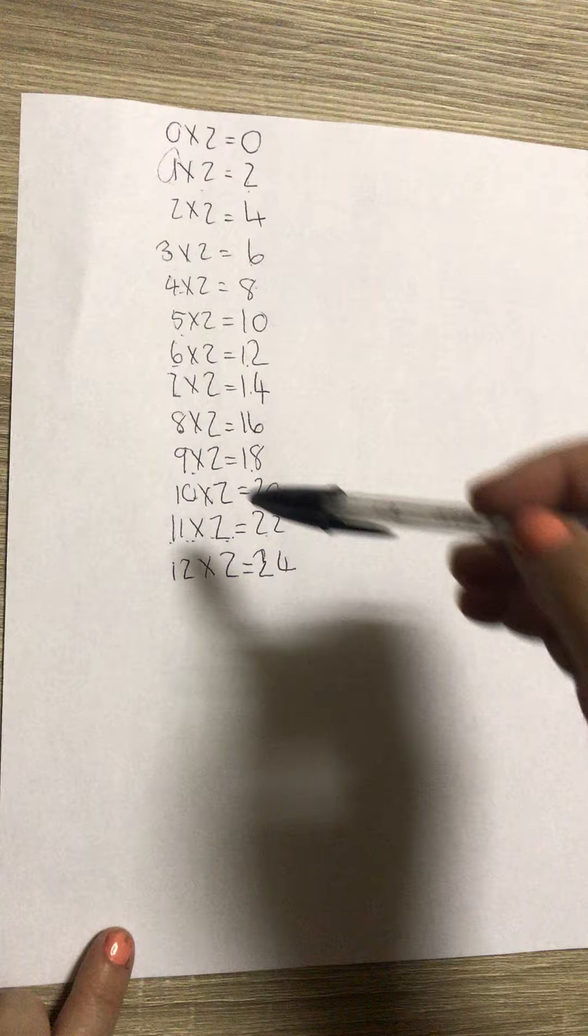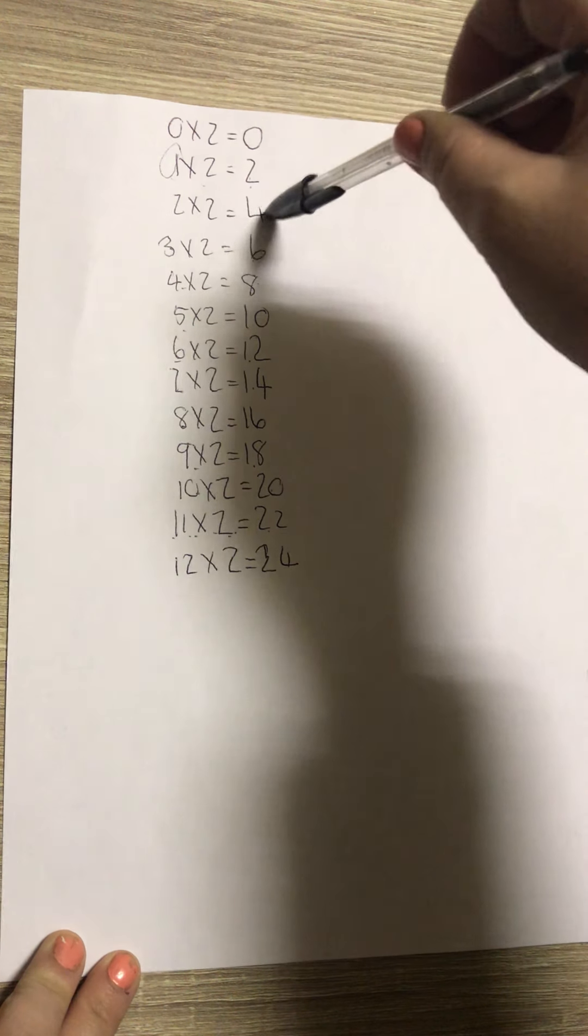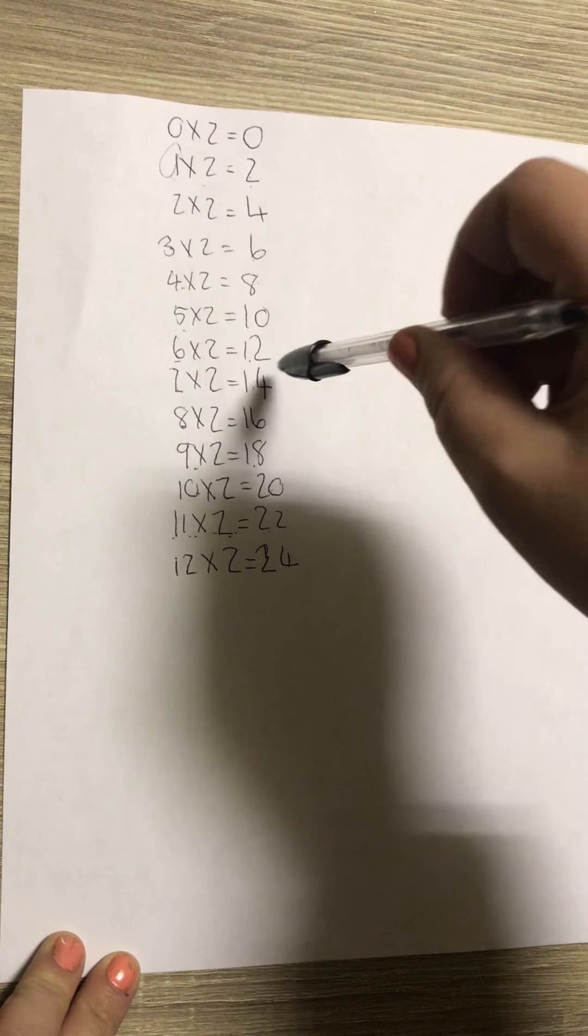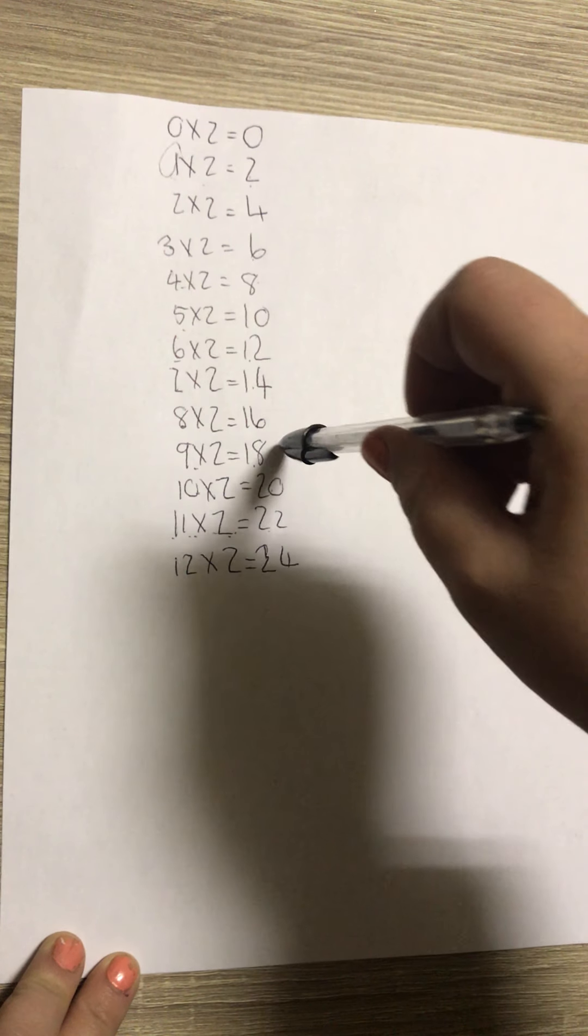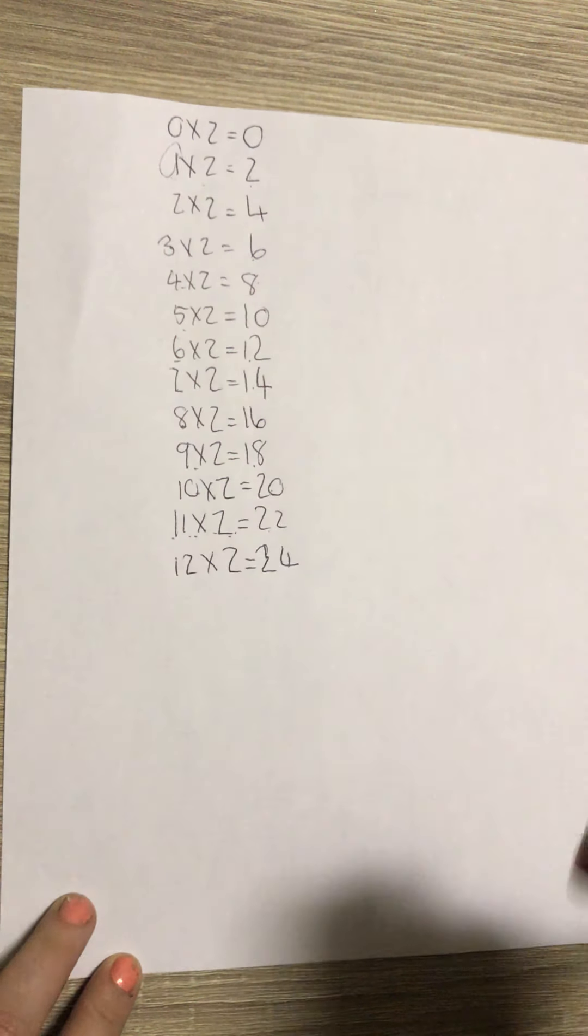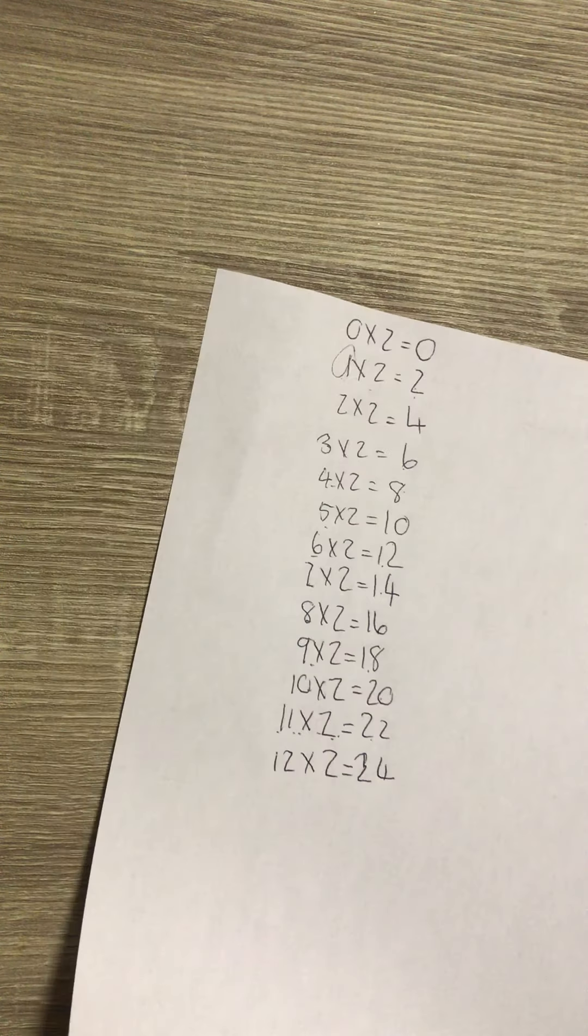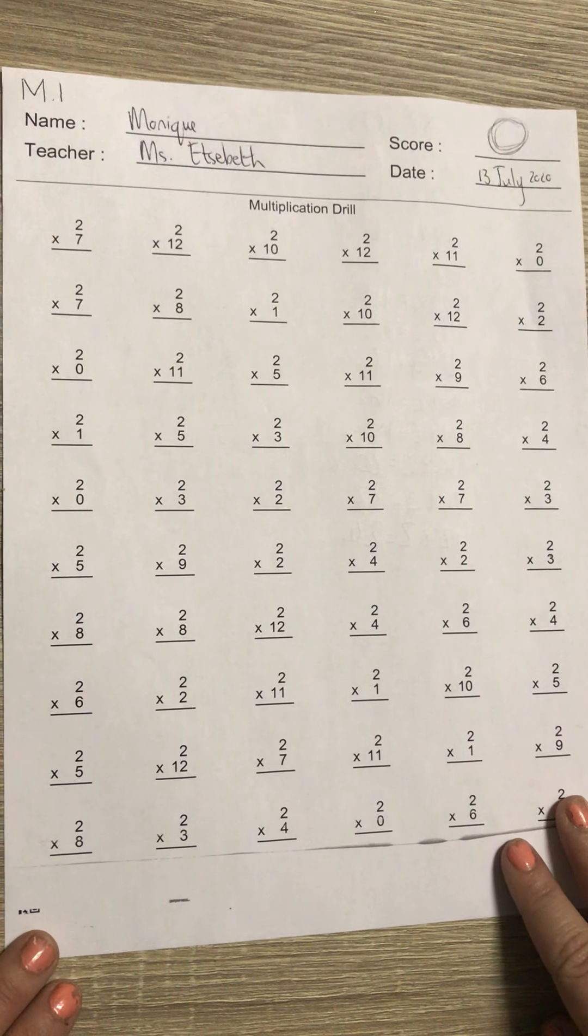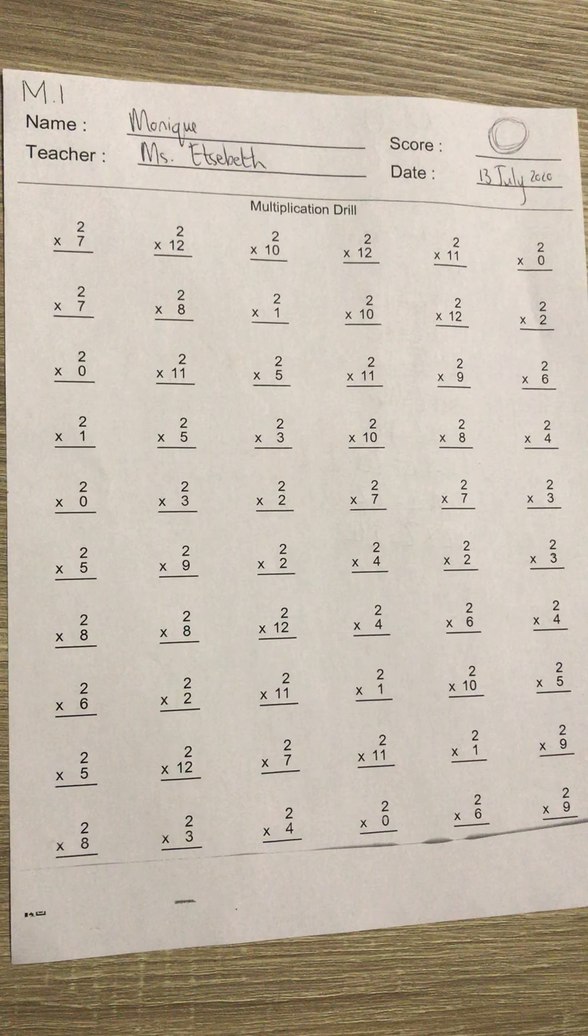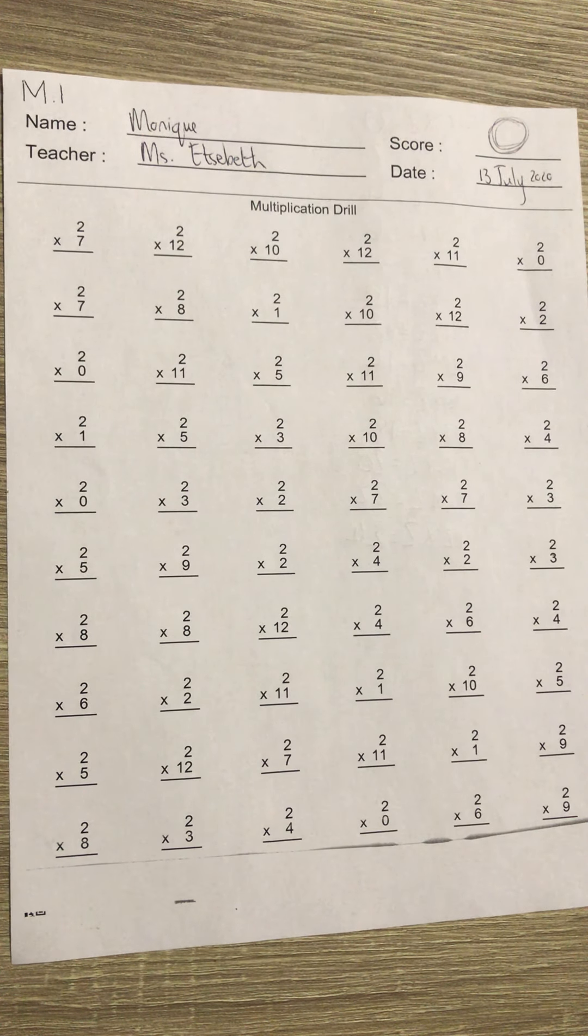Now quickly look at this. If we count in twos: 0, 2, 4, 6, 8, 10, 12, 14, 16, 18, 20, 22, 24. Okay, so that was just a reminder. When we do our times tables, you can just count in multiples of that number.